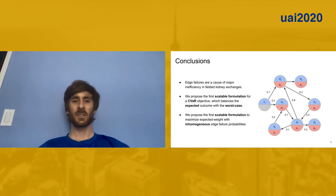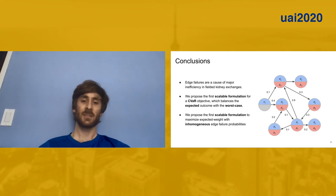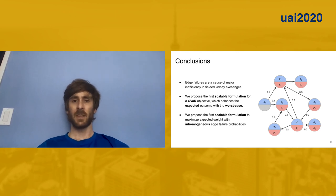Okay, so just to conclude, our work considers edge failures in kidney exchange, and this is a real source of inefficiency in fielded exchanges. We provide the first scalable formulation for a CVaR objective, which balances the expected matched weight with the worst case matched weight. And finally, we propose a scalable formulation which maximizes expected weight using inhomogeneous or non-uniform edge failure probabilities. Neither of these things have been done in previous work. Thank you for your time.